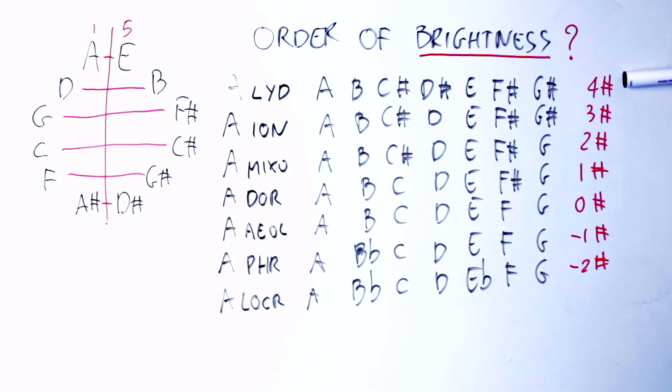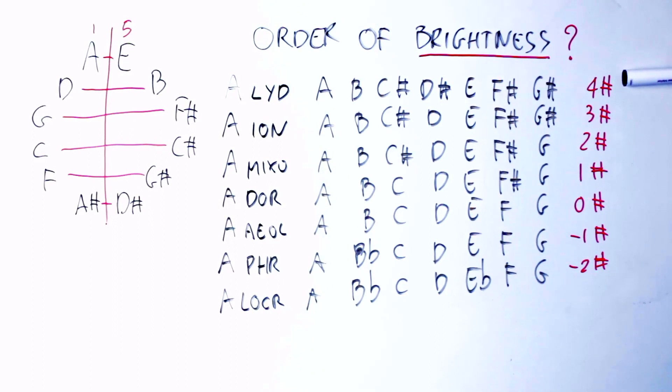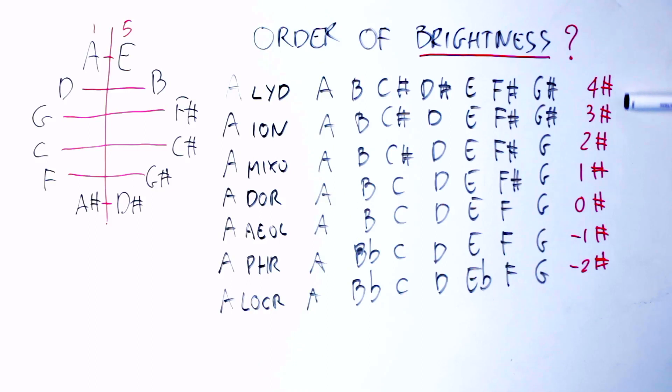Lydian is the brightest mode because it has the most sharps, and Locrian is the darkest mode because it has the most flats. All the other modes are shades in between the brightest and the darkest. When I say bright and dark here, I mean that the lower you go in the order of brightness, the darker is the sound of the mode, and the higher you go, the brighter is the sound.